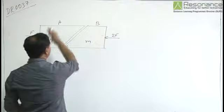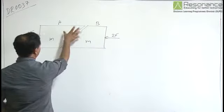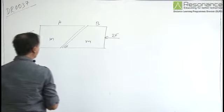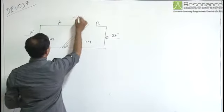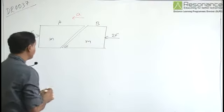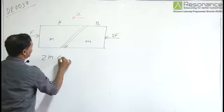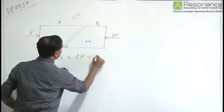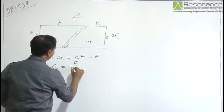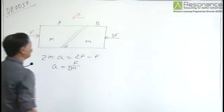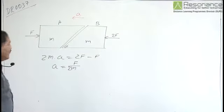If we consider the whole as a system, as they are not sliding over one another, then let us assume the acceleration of the blocks to be equal to A. This A can be obtained: 2M into A is equal to 2F minus F, or A is equal to F by 2M. These are the accelerations of each block.